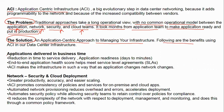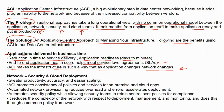The solution is an application-centric approach to managing infrastructure. The benefits include: application delivered in business time, reduction in service delivery time from days to minutes, and end-to-end application health scoring. ACI also enables application-driven network changes — if you move a server from one switch to another, the controller automatically instantiates the policy on the new switch without any manual reconfiguration.